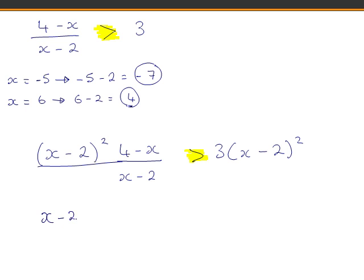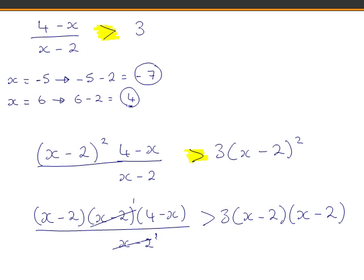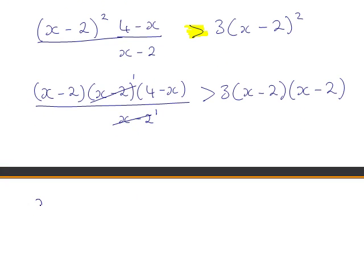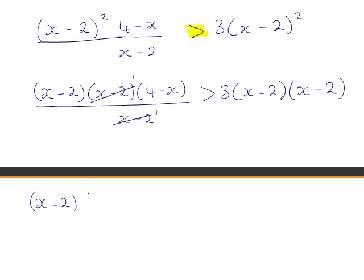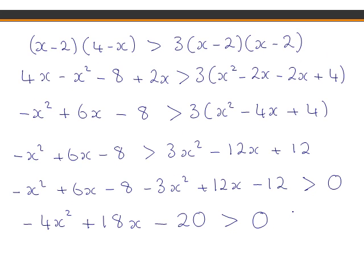Now multiplying this out: (x − 2) will divide into one of the (x − 2)'s here once, which simplifies the left side. We have now simplified our problem as it no longer contains a denominator. Multiplying the right side out gives us a quadratic inequality.